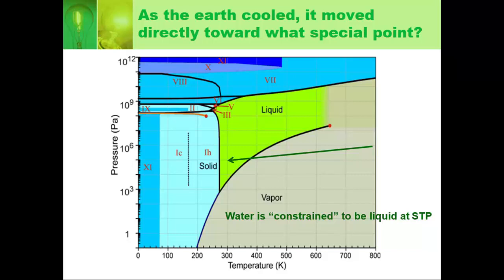And so this is directly close to one of the special points that we had on the graph. Remember we have the critical pressure, which is right here, and then we have the triple point that's right there. So you can summarize this as the Earth cooled toward its triple point and then stopped.